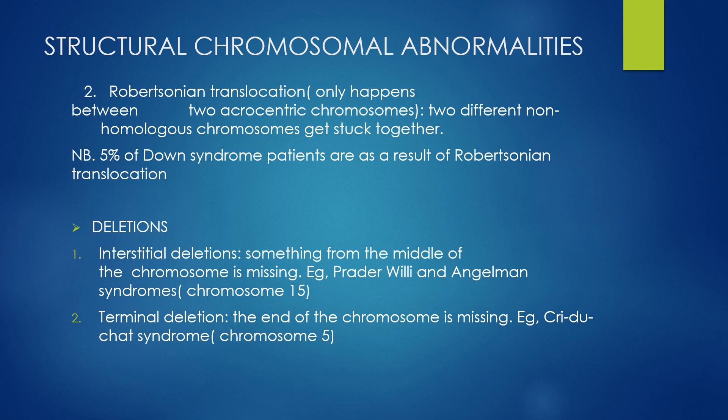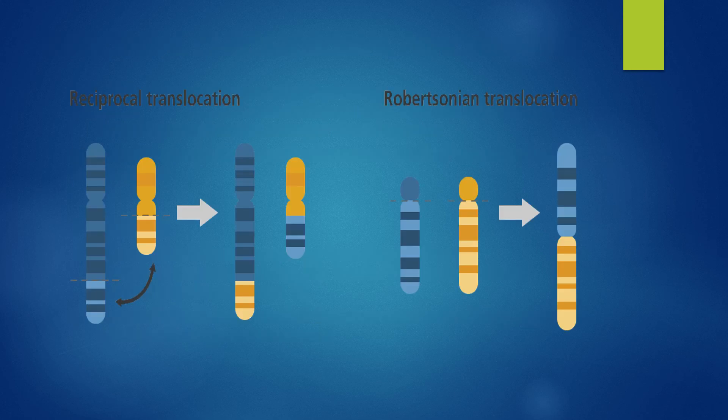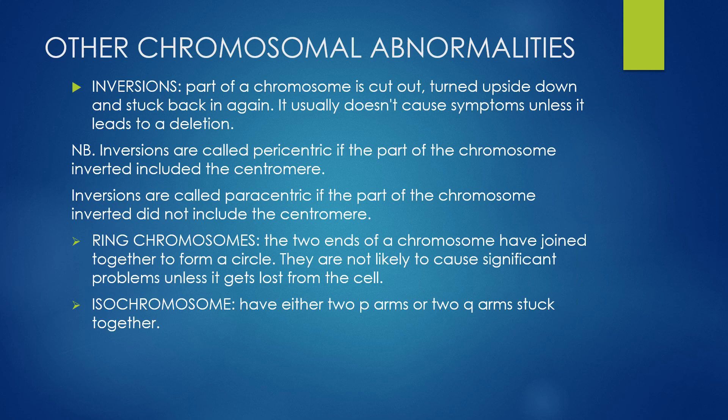The next structural chromosomal abnormality is a deletion. We have different types. An interstitial deletion is where something from the middle of the chromosome is missing. An example is Prader-Willi and Angelman syndromes, which occur on chromosome 15. A terminal deletion is where the end of the chromosome is missing. An example is Cri-du-chat syndrome, which occurs on chromosome 5. Inversions are when parts of a chromosome are cut out, turned upside down, and stuck back in again. This usually does not cause any symptoms unless it leads to a deletion.